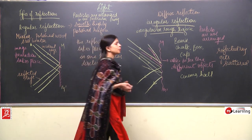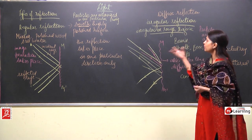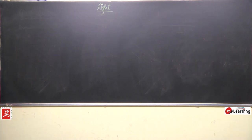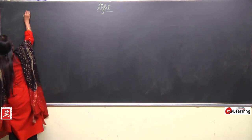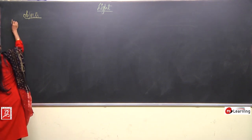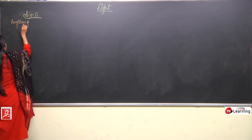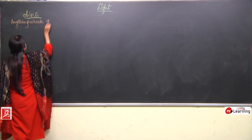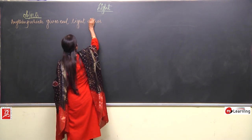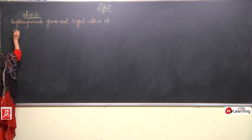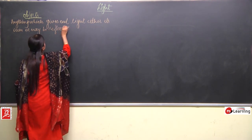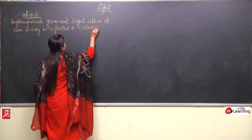Now we will talk about objects and images — what actually an object is and what an image is. Let me clean up the board. Now, what are objects? What is the meaning of objects?